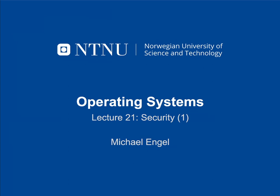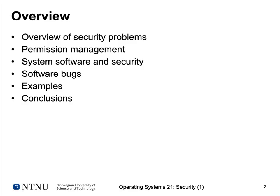Welcome back to Operating Systems. Today we are going to talk about security. Let's give a quick overview of today's lecture. First, we're going to talk about security problems in general, and then dig deeper into what operating systems do to ensure security. We'll talk about permission management, how this relates to system software, some reasons for insecure systems such as software bugs, give some examples, and close with conclusions.